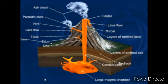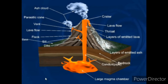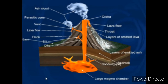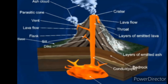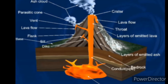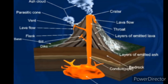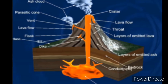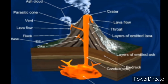For example, felsic magma such as rhyolite and granite are acidic magmas, which are also catastrophic. We also have basic magma — the mafic magma — examples of which include basalt and gabbro.